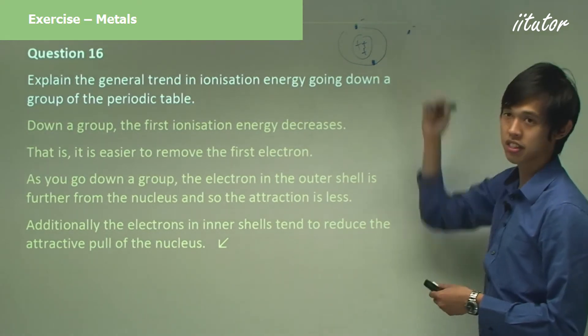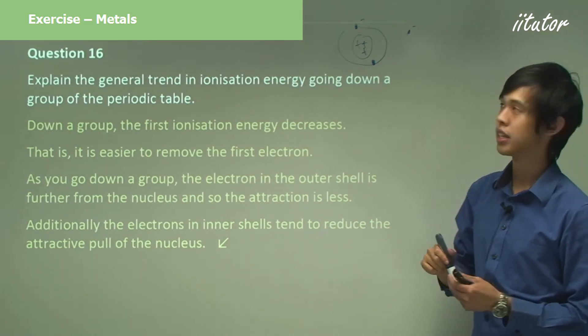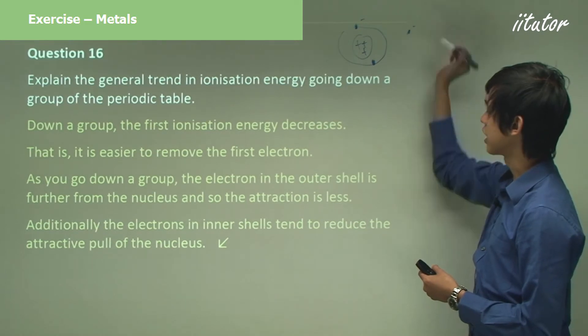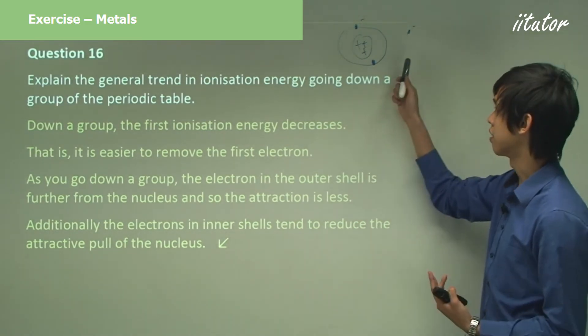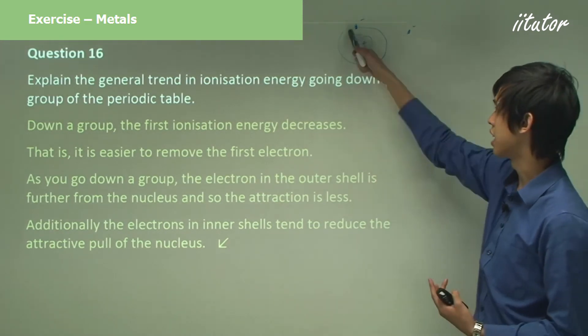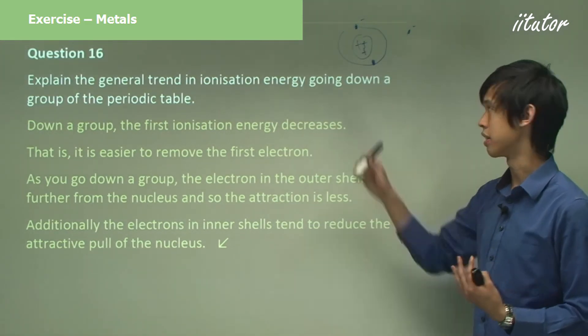Because there's negative charges near the nucleus, to this electron here it looks like there's actually less positive charges than what there really is, because these negative charges tend to cancel out a little bit of this positive charge.